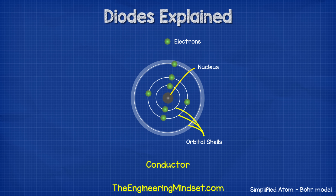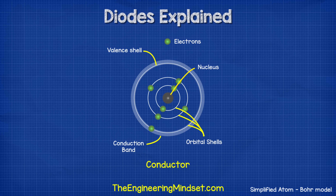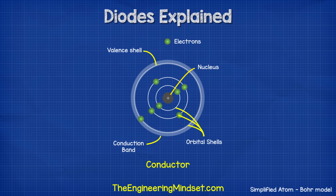The electrons located farthest away from the nucleus hold the most energy. The outermost shell is known as the valence shell, and a conductor has between one and three electrons in its valence shell. The electrons are held in place by the nucleus, but there's another shell known as the conduction band. If an electron can reach this it can break free from the atom and move to another. With a metal atom such as copper, the conduction band and the valence shell overlap so it's very easy for the electron to move.